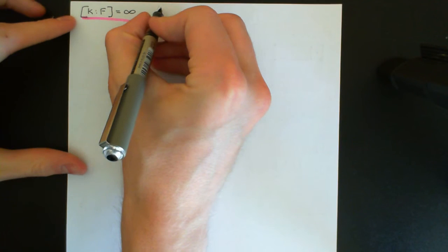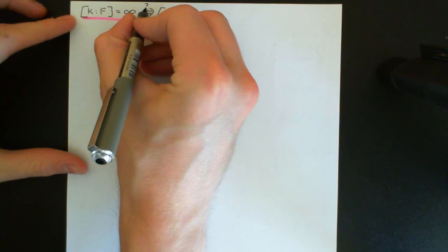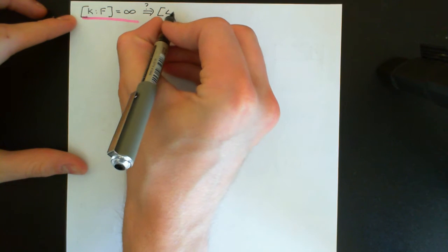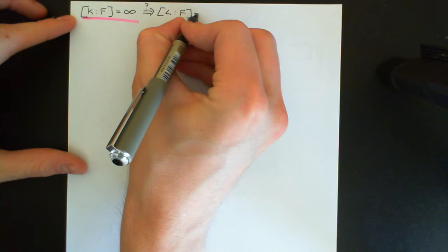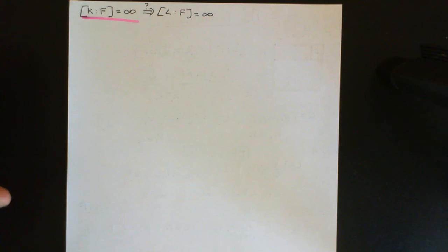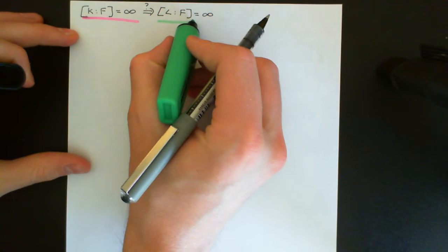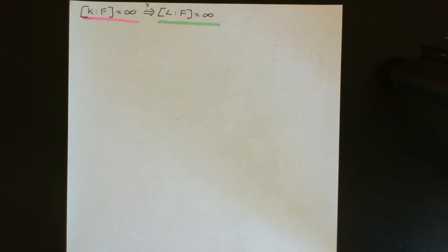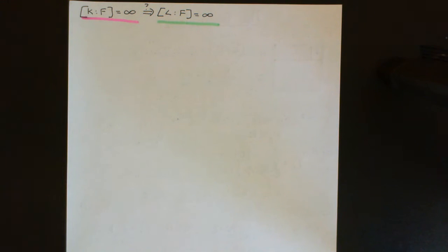That's fairly intuitive, but it does require proof. What does it mean for the degree of K over F to be infinite? If the degree of K over F is infinite, then if you view the intermediate field as a vector space over F, no finite set of vectors will span that vector space.